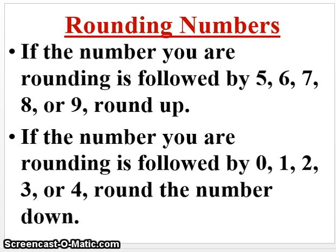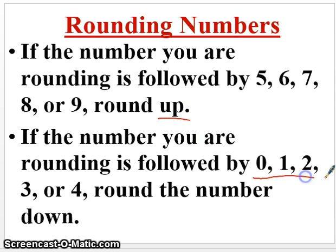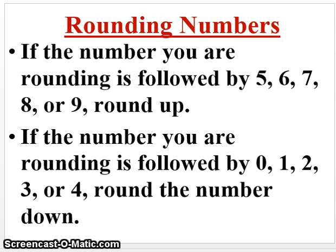Before we do examples, a quick explanation of rounding. You should have this knowledge, but if you don't: anything followed by 5, 6, 7, 8, or 9, we would round up. Anything followed by 0, 1, 2, 3, or 4, we would round down — essentially just like you've done in math. Rounding will be important; we'll have to consider rounding these numbers.